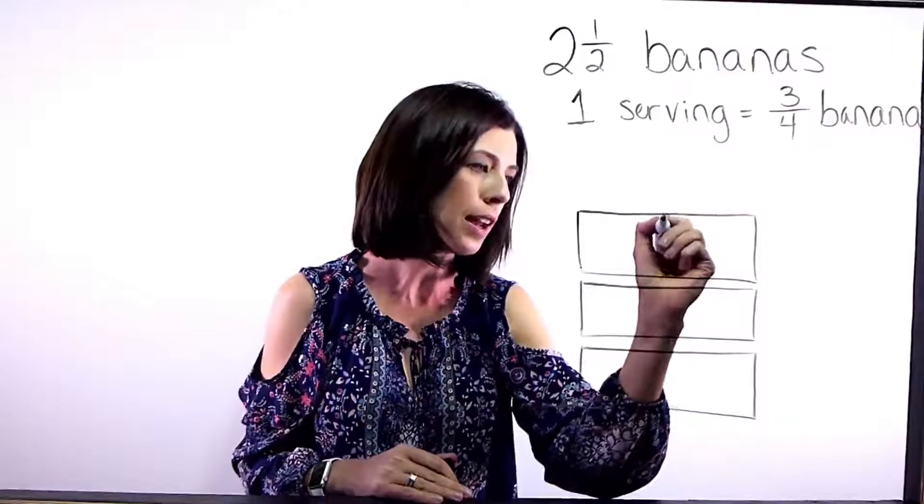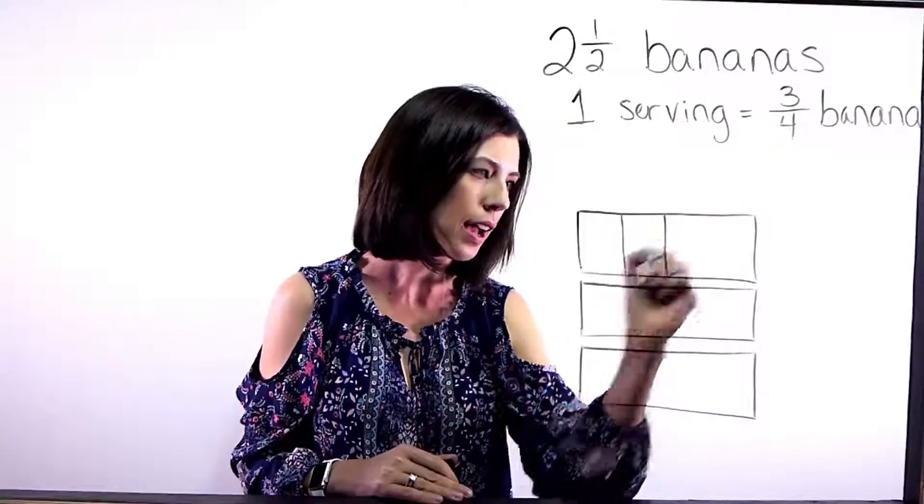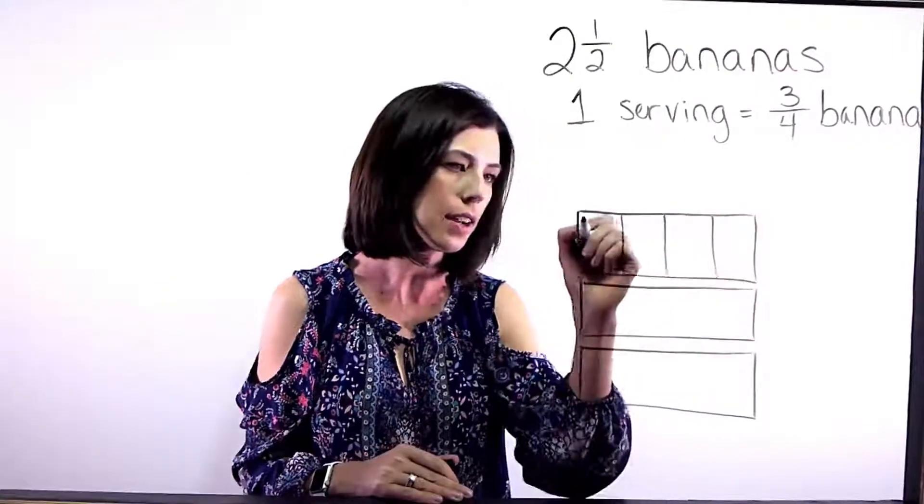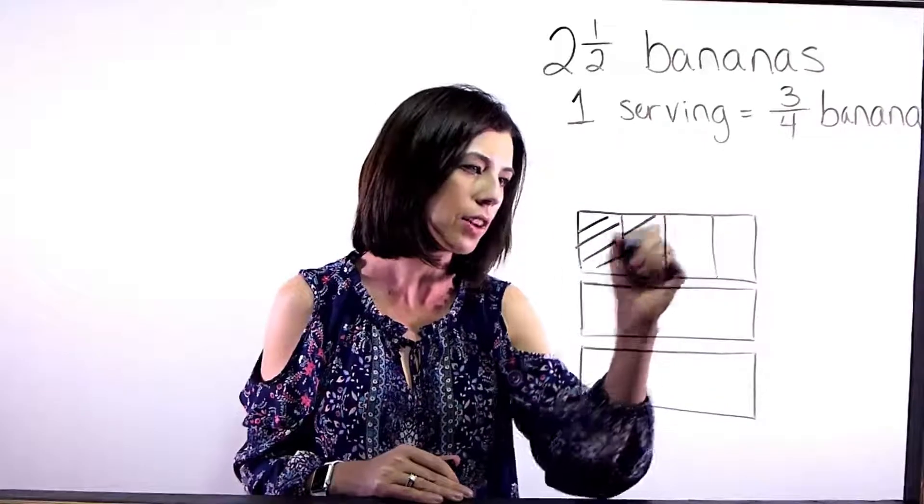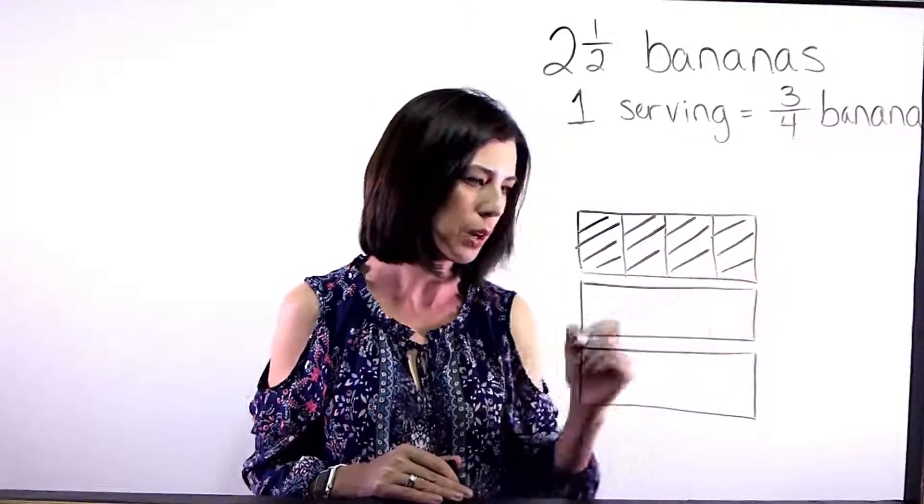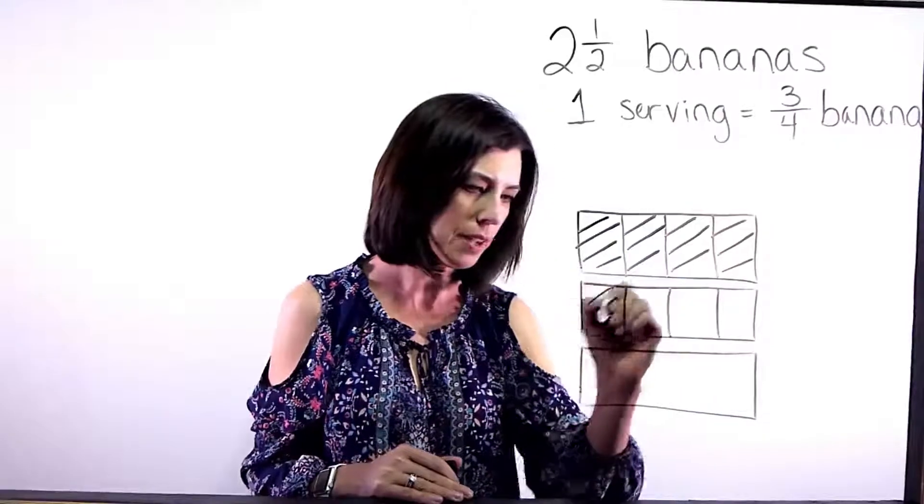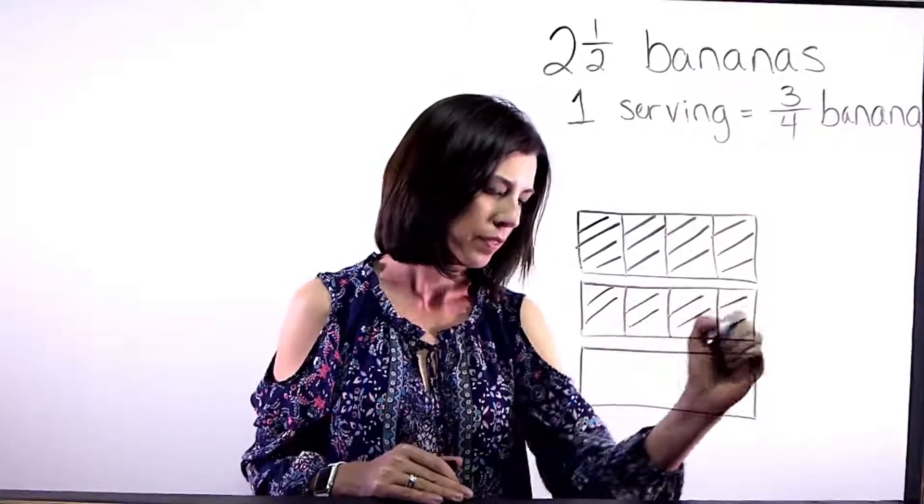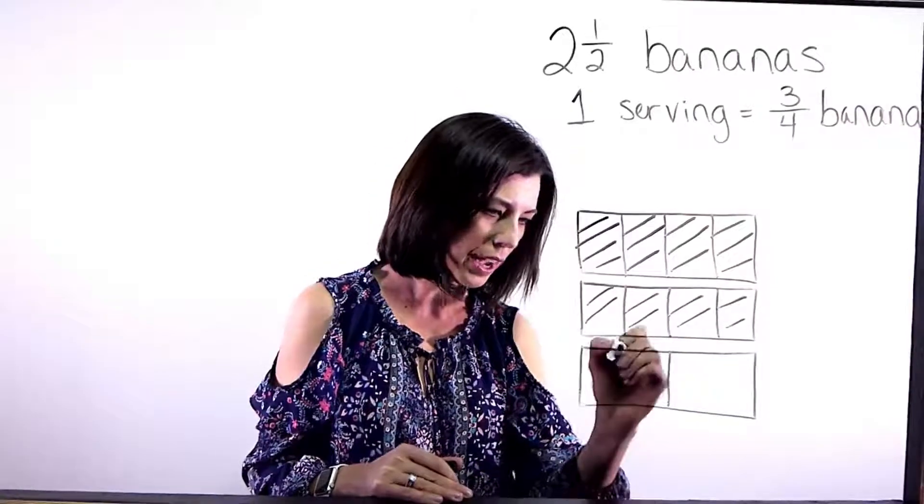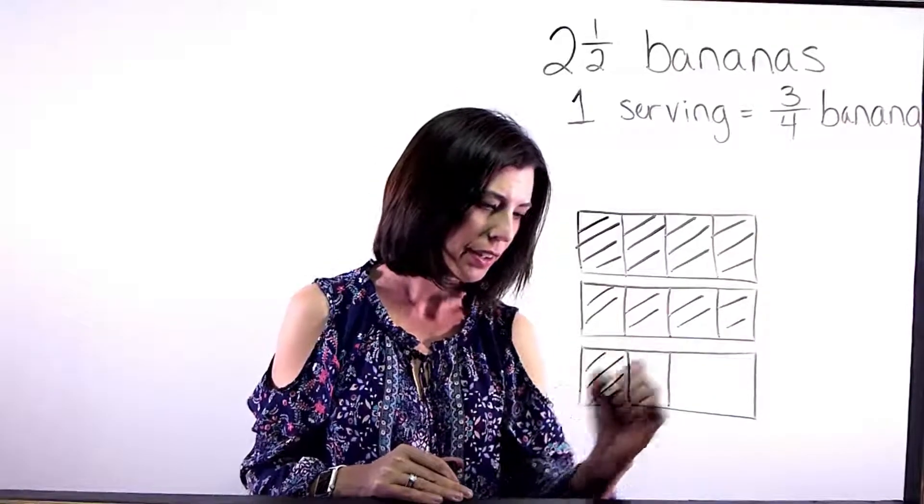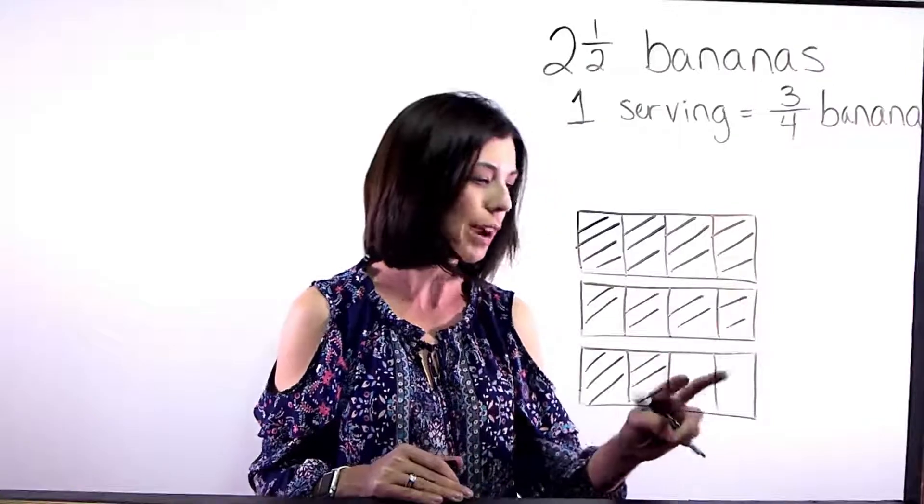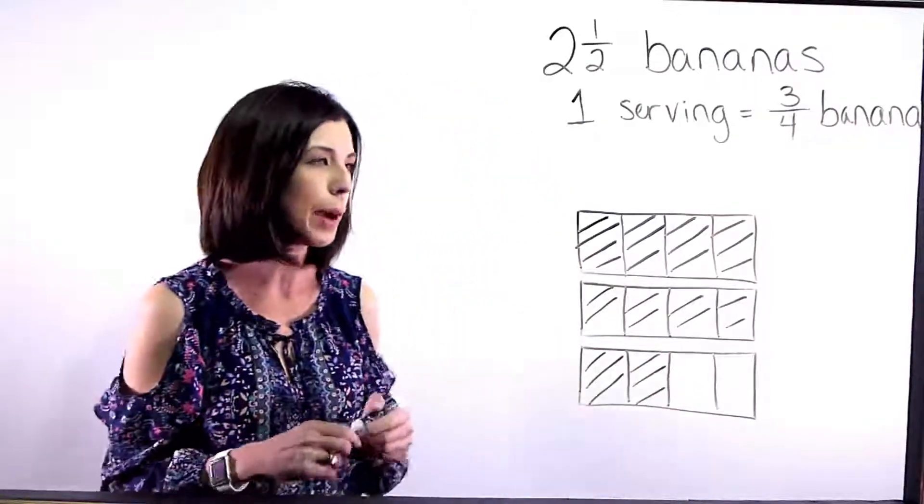So here's my first banana and I have four pieces there in a whole and I know that I have all of these already. Okay, so there's one whole banana. Here's my second whole banana. And then I know that I have another half of a banana and I'll go ahead and put this piece too, but obviously these two pieces we don't have.